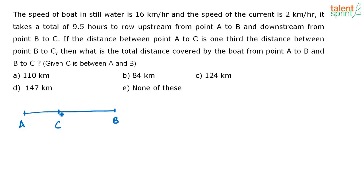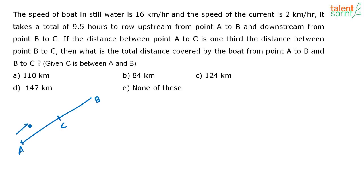Let A be here, B be here, and C be here. The boat is going upstream from A to B, and then coming downstream from B to C. The distance between A to C is one third of the distance between B to C. So if BC is X, then the distance AC is given as X by 3.